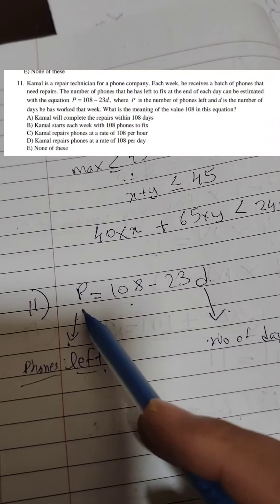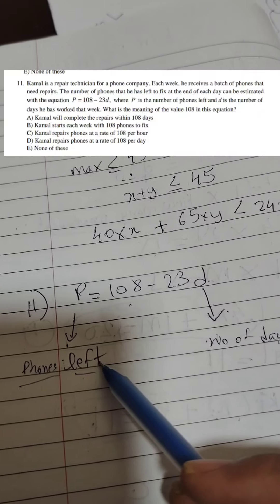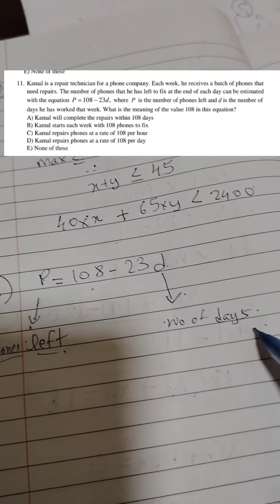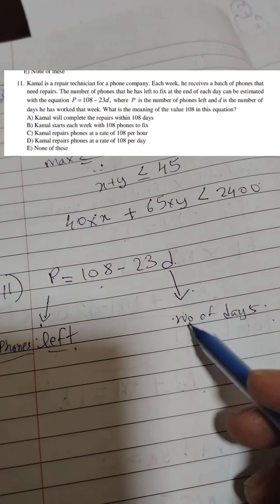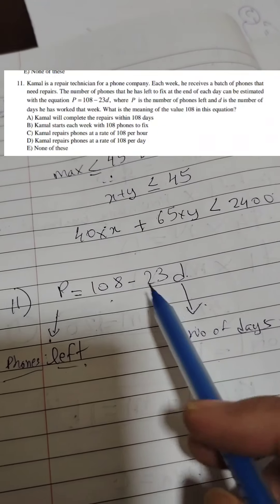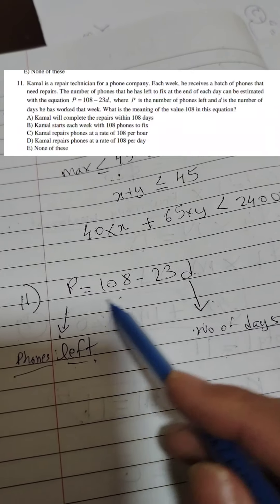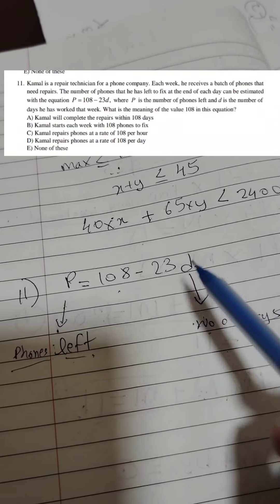It can be shown that the number of phones left to be fixed is denoted by P, and the number of days he worked in that week is denoted by D. The number of phones that he has yet to repair is given by this equation: P equals 108 minus 23D.